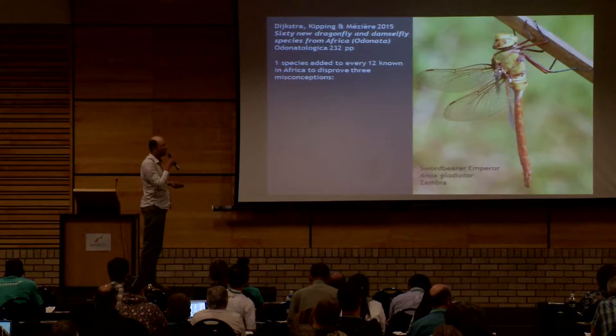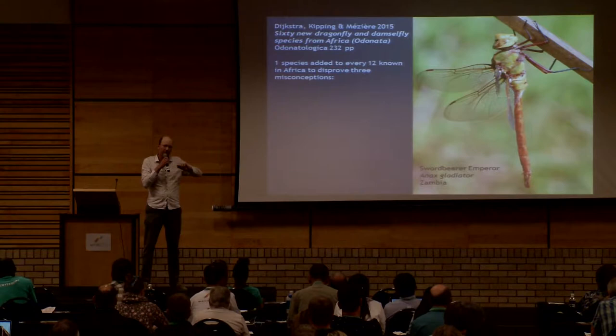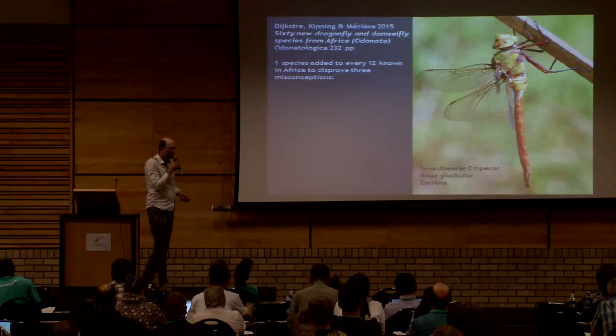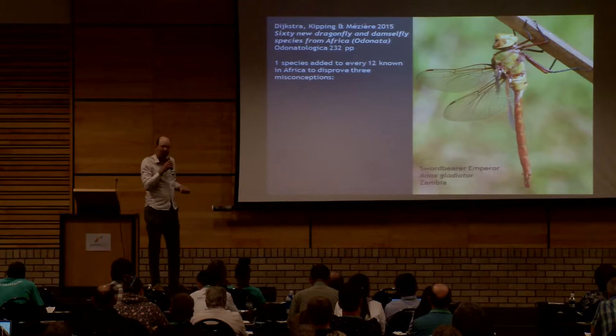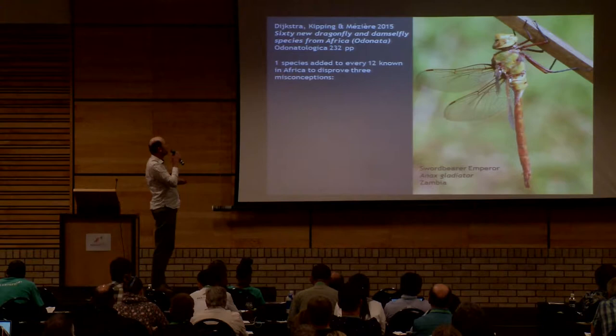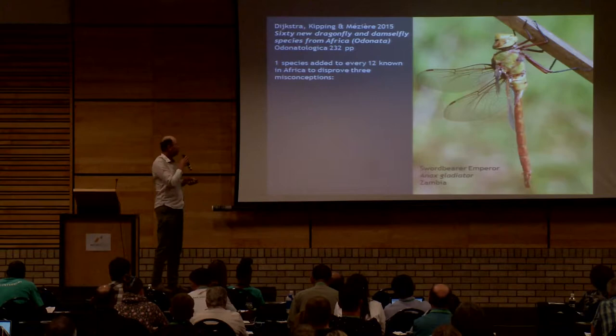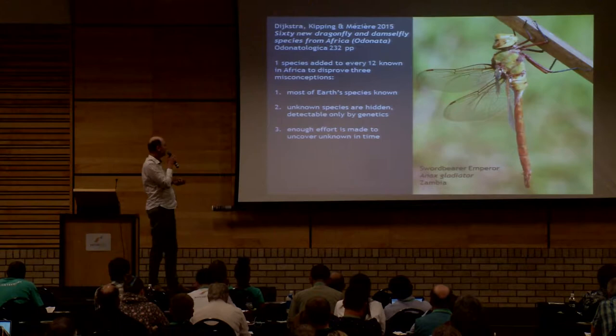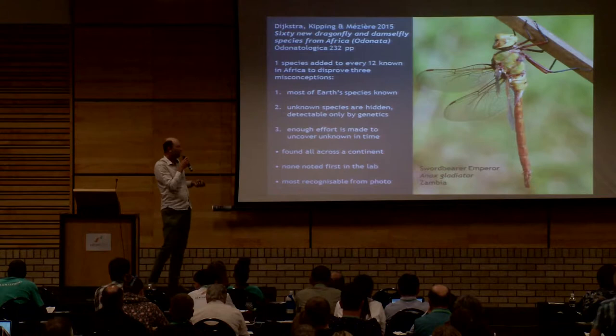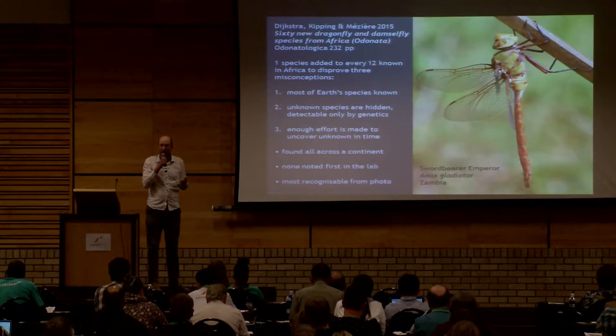To bring that whole story together: in 2015, I published a major paper. People doing foundational work don't always feel appreciated, and I'd been exploring Africa and finding new species but never getting around to describing them. So I decided to describe them all at once. In one paper, my two co-authors and I described 60 new species, adding one new species for every 12 already known in Africa. The goal was to dispel three misconceptions: that most species are already known, that unknown species are hidden and detectable only by genetics, and that enough effort is being made to uncover the unknown in time.